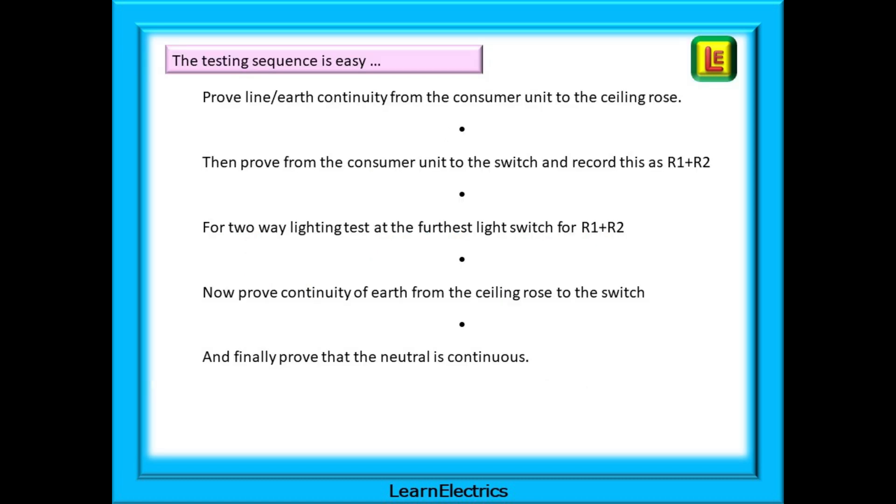The testing sequence is easy. Prove continuity from the consumer unit to the ceiling rows. Then prove to the switch and record this as R1 plus R2. For two-way lighting test to the furthest switch for R1 plus R2. Now prove that the earth or CPC from the ceiling rows is continuous. And finally prove that the neutral is continuous.